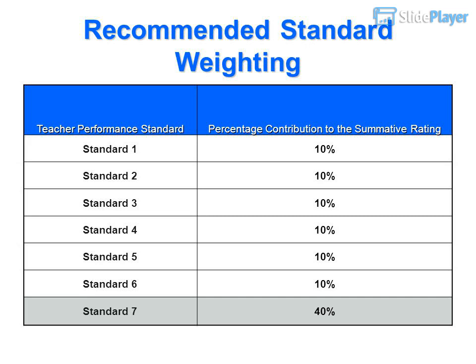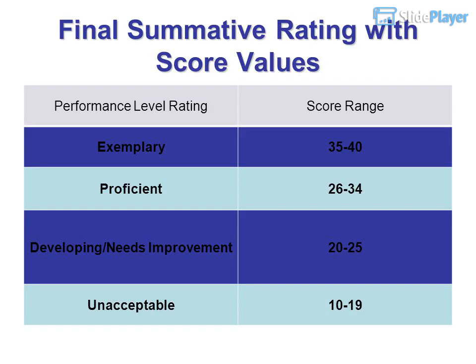Teachers without SGPs use all multiple alternative measures. Recommended standard weighting: Standards 1 through 6 collectively account for 60% of the summative rating, and Standard 7 accounts for 40%. Final summative rating score ranges: Exemplary — 35 to 40; Proficient — 26 to 34; Developing/Needs Improvement — 20 to 25; Unacceptable — 10 to 19.